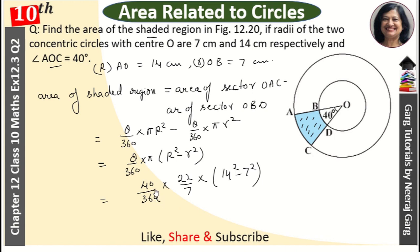This zero with this zero cancel. This becomes 9. So this becomes 22 upon 9 into 7, and this is 14 square minus 7 square. You can apply A square minus B square or solve directly as 196 minus 49.